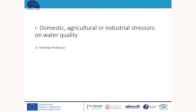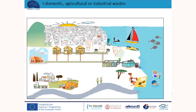Domestic, agricultural or industrial stressors on water quality, prepared by Valérie Michoté, professor in microbial ecology. Our case study is a coastal zone with a coastal town or seaside resort at the bottom, presenting a harbor and an industrial factory in the middle, and a river in the front along which agricultural activity stands. The town, factory, boats, and agricultural activity generate sewage that ends up, after treatment or not, in the sea and impacts the quality of coastal water.